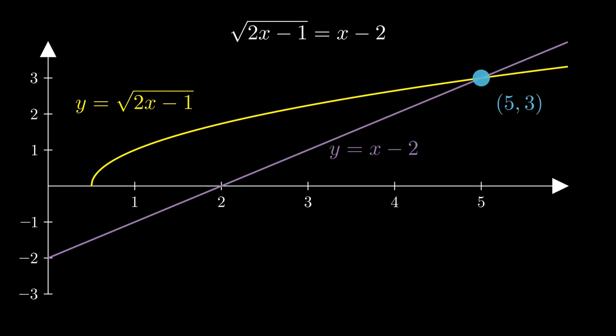But remember what we said earlier. Each number can also have a negative square root. If we want to add that fact to this picture, we'll also need to include the graph of y equals negative root 2x minus 1. If we include that new graph, our purple line does intersect it, right at the extraneous solution x equals 1.